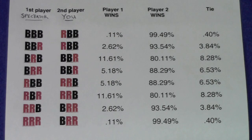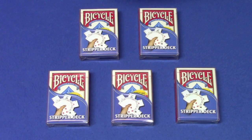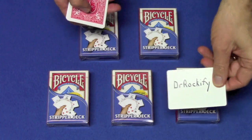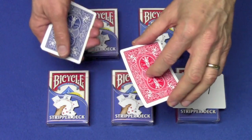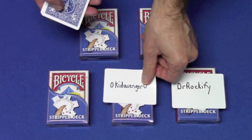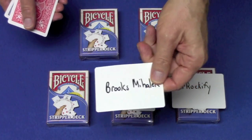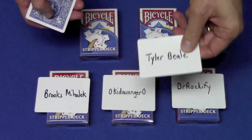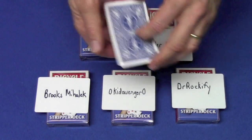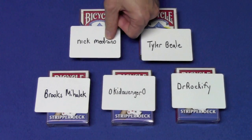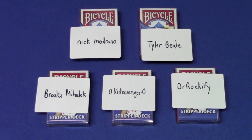Go out, make some money, have some fun with this, and let me know what you think. Here are the winners for the stripper deck giveaway from my last video: winner number one is Dr. Rockify, winner number two is Zero Kid Avenger Zero, winner number three is Brooks Mahalik, winner number four is Tyler Beale, and winner number five is Nick Medrano. All winners, contact me through personal message and I'll send your prizes out right away.